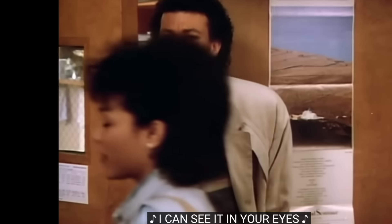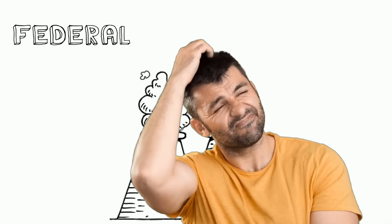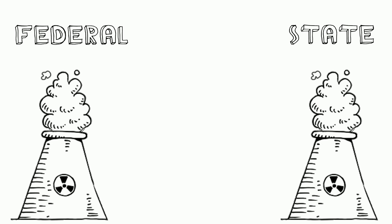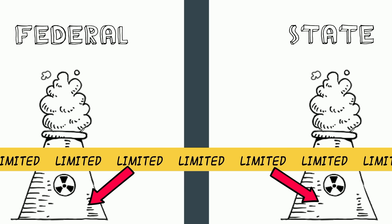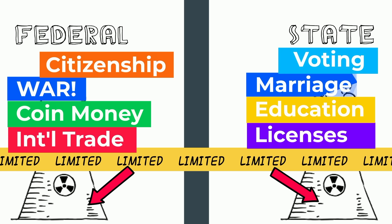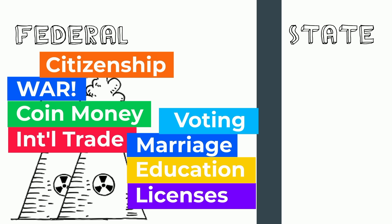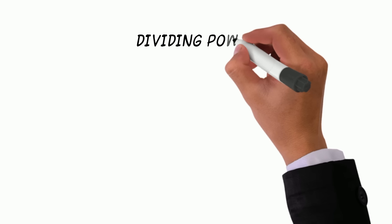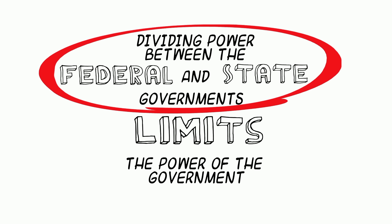You might wonder: how does establishing a federal system actually limit the power of the government? When we take all of the powers that a government can do and we divide them, we're actually reducing the power of both. If you combine all the powers of the central government and the powers of the state governments, all of a sudden we have a very authoritative, very powerful government — and this is something we don't want. A federal system inherently limits the power of the government simply by dividing powers between the federal government and state governments.